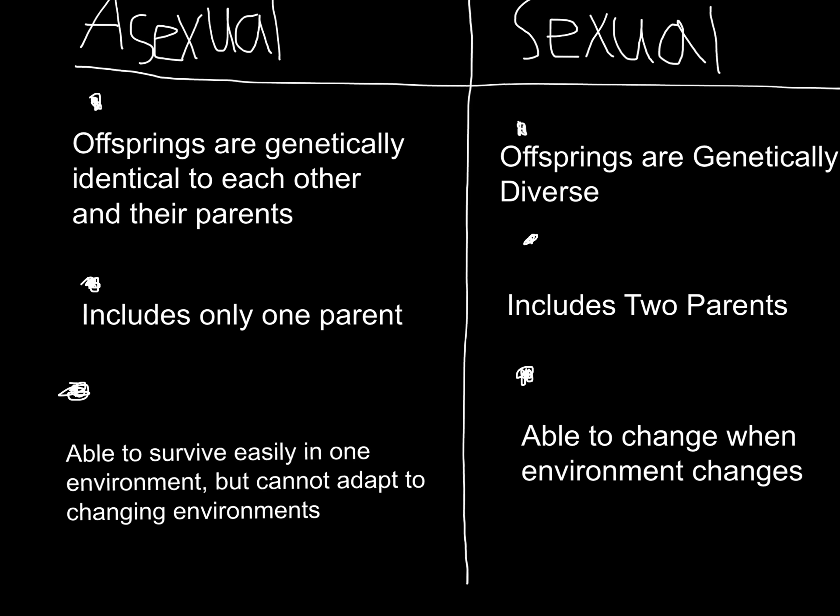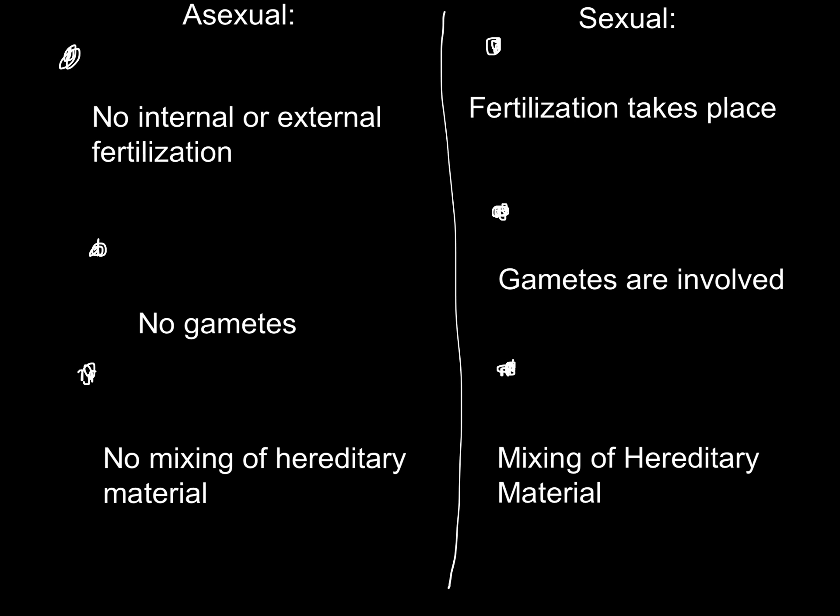First, I want to mention the difference between asexual and sexual reproduction. In sexual reproduction, two parents take part. Variation occurs in offspring, it includes two parents, and it is able to change when the environment also changes. For asexual reproduction, a single parent is involved, offspring are genetically identical to the parent, and there is no mixing of hereditary material.